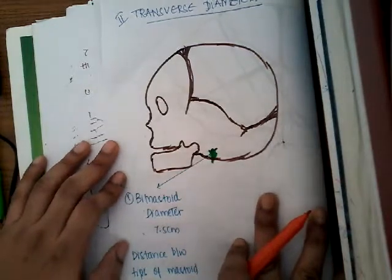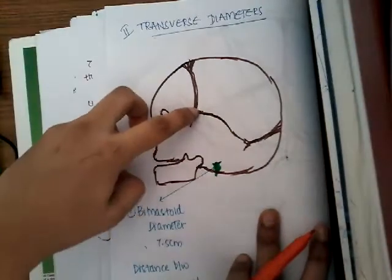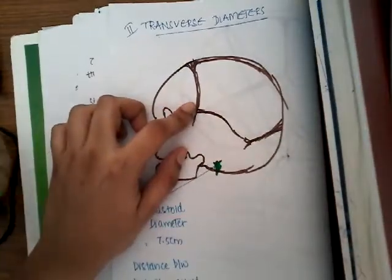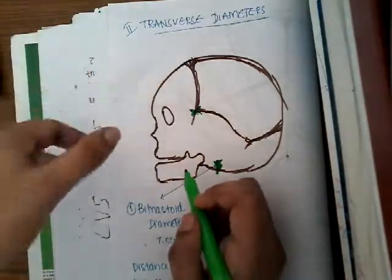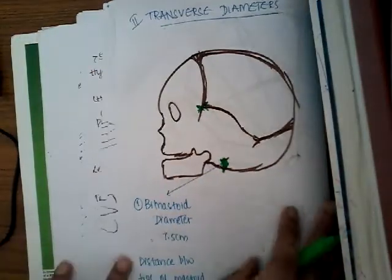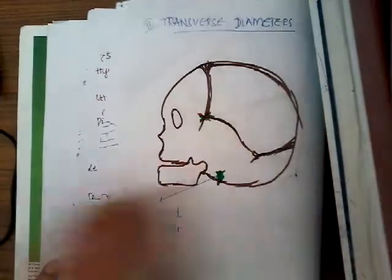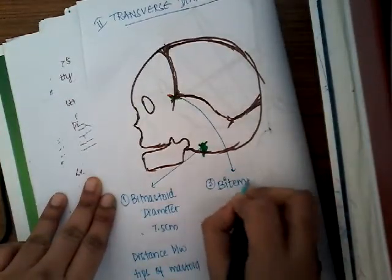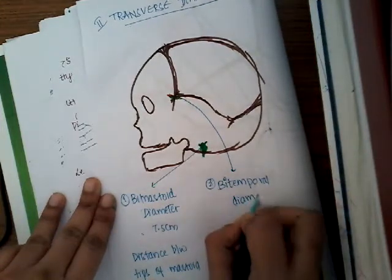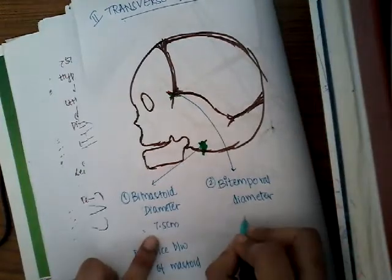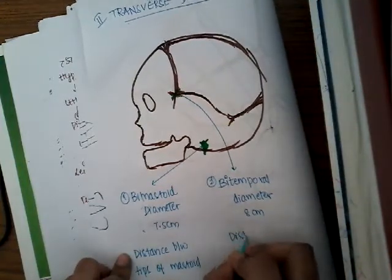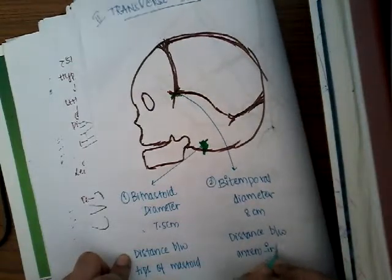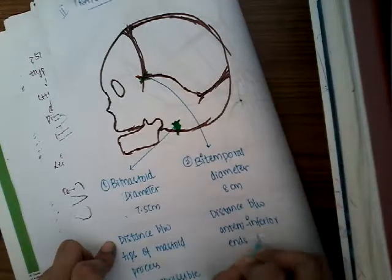The bitemporal diameter is the distance between the two coronal sutures. If you see, this is the coronal suture and this is the sagittal suture. The distance between the two coronal sutures — one end here and the other end that side — is called the bitemporal diameter. Its length is 8 centimeters, and it is the distance between the anterior and inferior ends of the coronal suture.